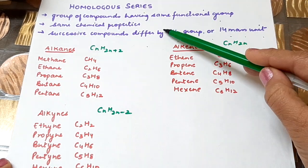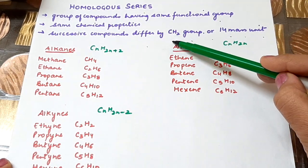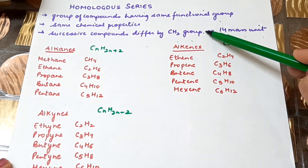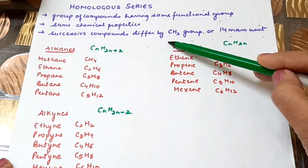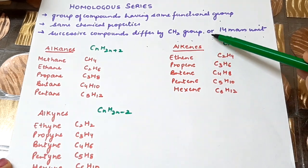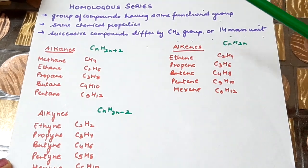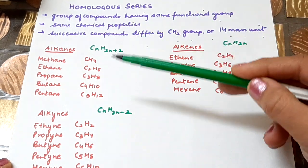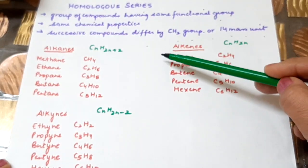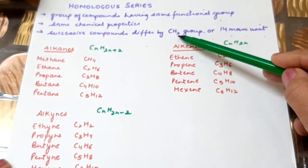Now let's understand what it means that successive compounds differ by a CH2 group. That is, in the homologous series, the difference between consecutive compounds is CH2.